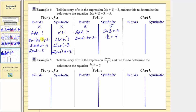Continuing, we want to undo add one, so we subtract one, which gives us four minus one, which equals three, bringing us back to x. So x equals three.